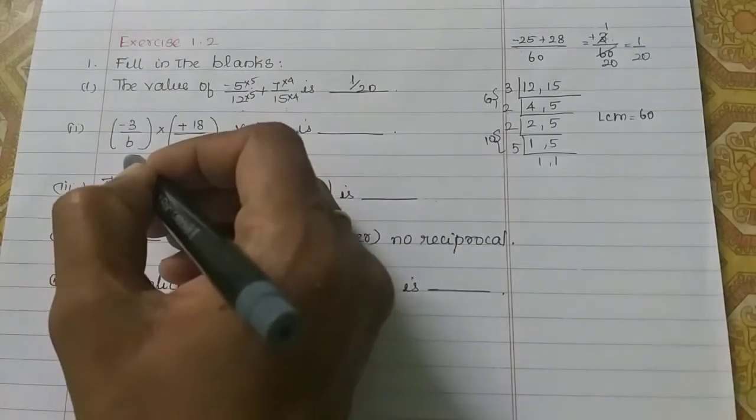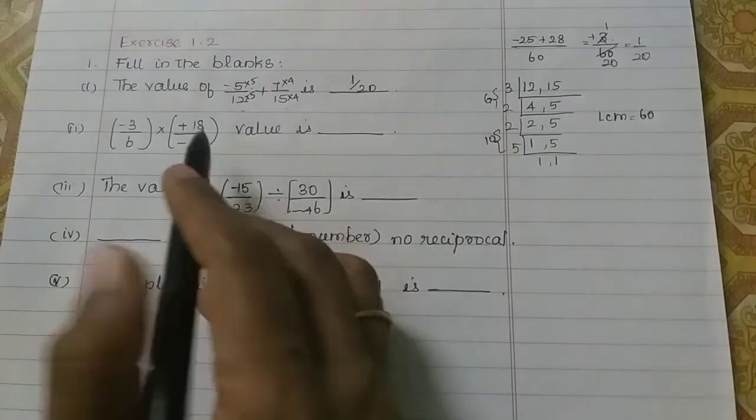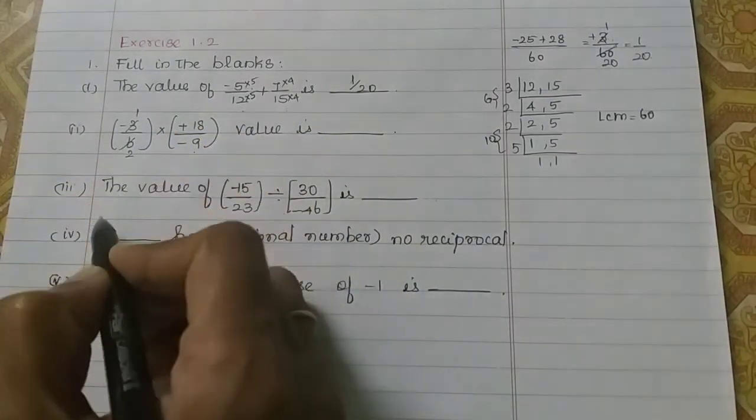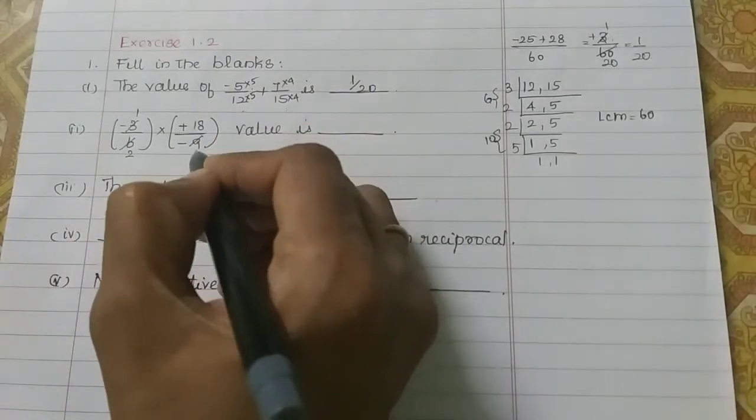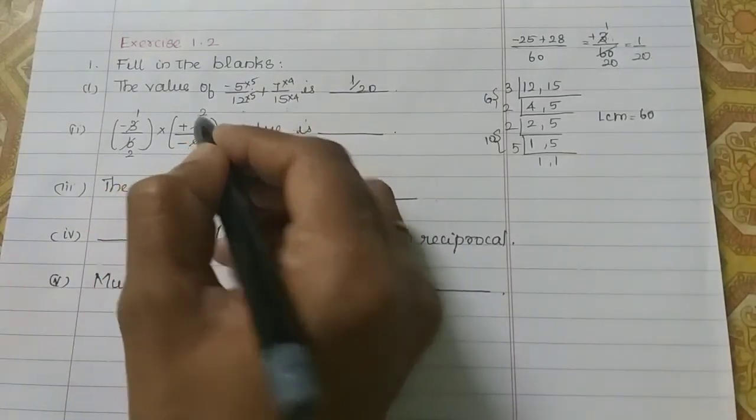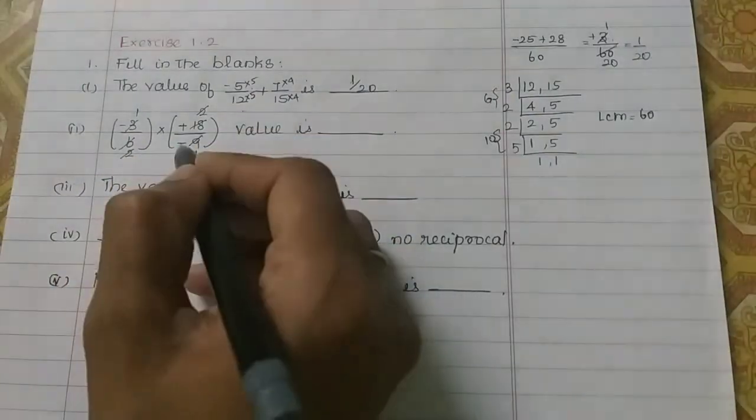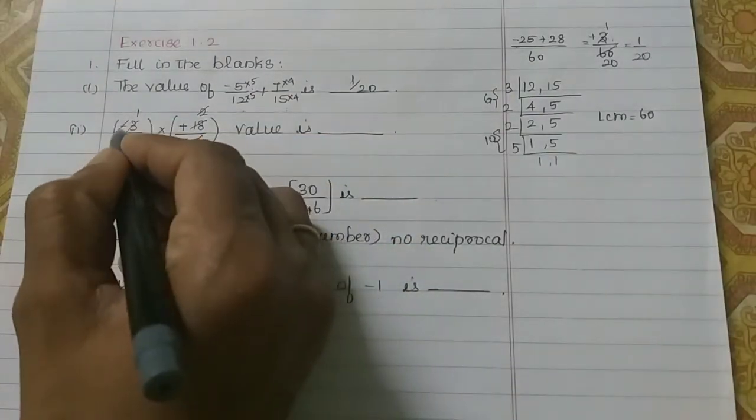Okay? So, straight to straight, we will simplify. Cross, we will simplify. In the 3 tables, 3 ones are 3, 3 twos are 6. Then, in the 9 tables, 9 ones are 9, 9 twos are 18. So, in the 2, we will cancel. Then, in the minus symbol, we will cancel.